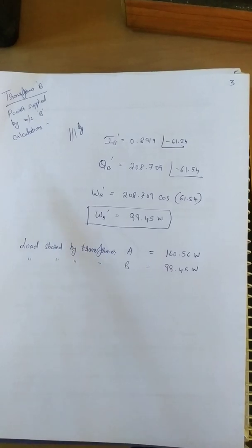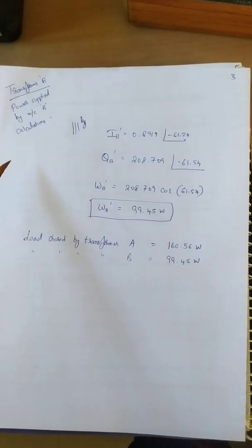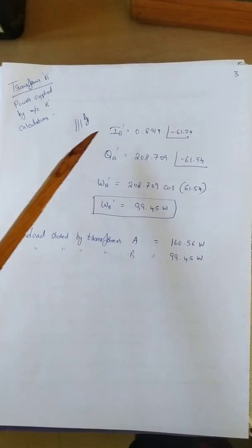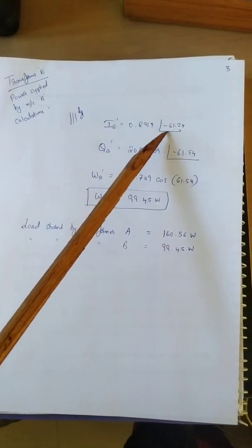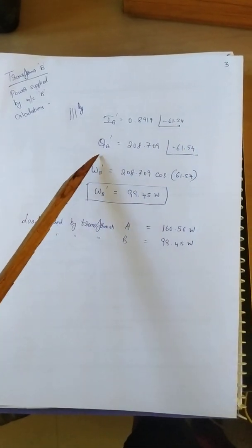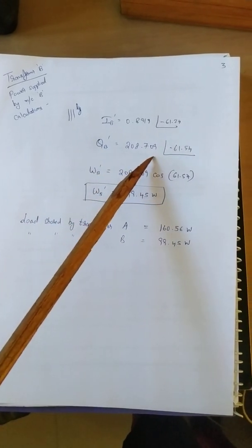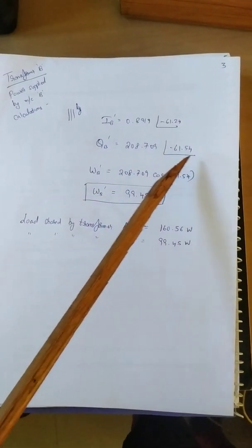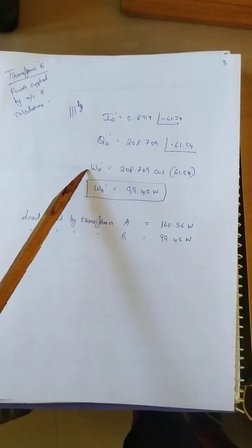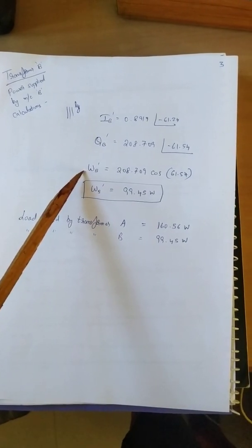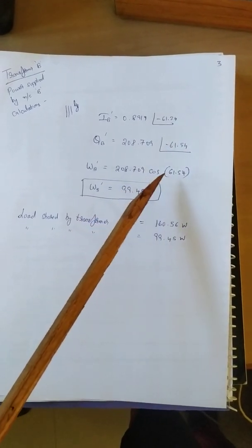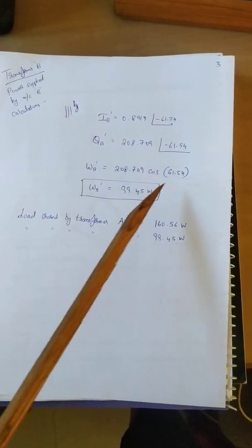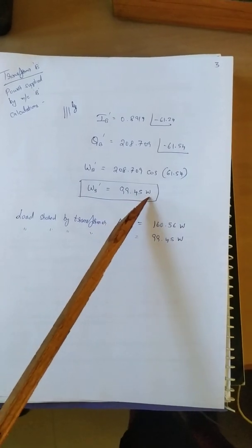Similarly we calculate the power supplied by machine B or Transformer B. We have IB dash is equal to 0.8919 at an angle minus 61.24. We get kVA, QB dash 208.709 at an angle minus 61.54. And we get WB dash which is the power supplied, which is kVA multiplied by cos phi, is 208.709 into cos of 61.54 which is 99.45 watts.